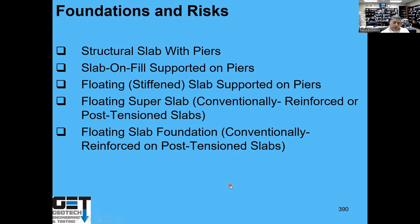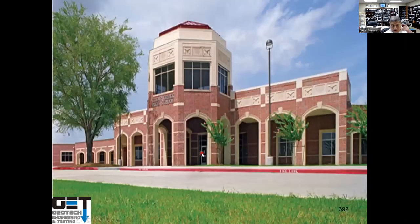School districts need to consider the kind of foundations to use. At University of Houston, Texas A&M, and Rice University, a lot of these projects are going with what we call a structural slab with piers — they have a void underneath the slabs that structurally supports them. You can always go with a slab on fill supported on piers — it's less expensive. You can put select fill on the slab to get the PVR less than one inch. For maintenance buildings you can go with a slab on piers with no fill underneath it — that allows the slab to move up but not down because you've got piers there.